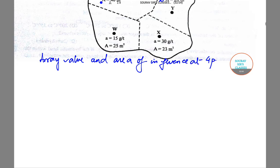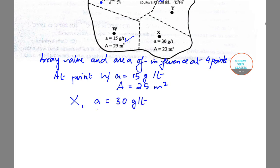I'll jot down the values. Array value and area of influence at four points. At point W, a = 15 g/L and A = 25 m². At point X, a = 30 g/L and A = 23 m².